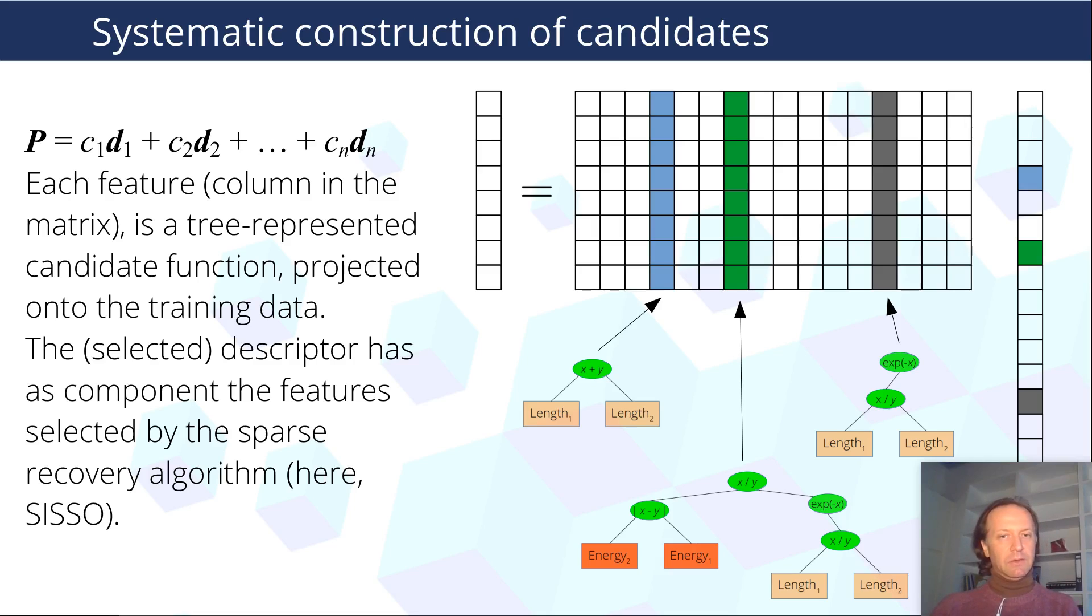You might also remember from the lecture that once these expressions are formed, they are expressed in terms of values with the data points that one has at hand, and then this constitutes a so-called sensing matrix. The problem is recast, at least for the compressed sensing formulation of symbolic regression, in a selection of features. So this system of equations is solved by finding the few features that best approximate our property P.